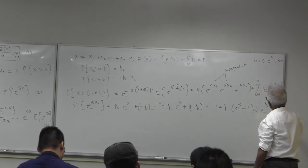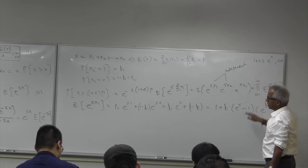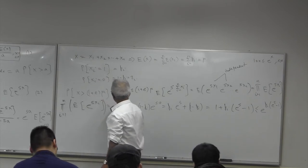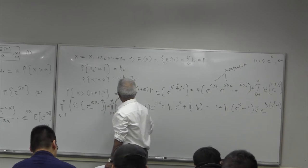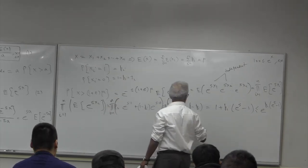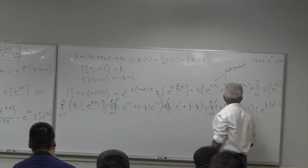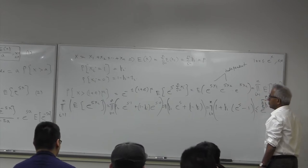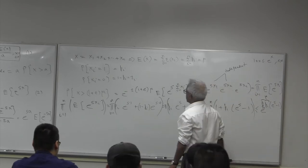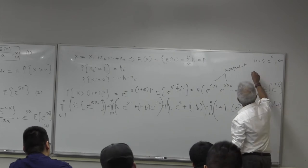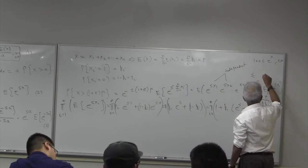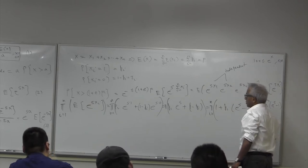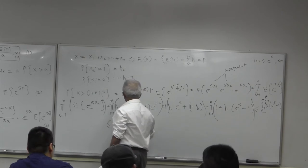Using the inequality 1 plus x is less than or equal to e^x for positive x, we get that 1 plus pi times (e^s minus 1) is less than or equal to e^(pi times (e^s minus 1)). Taking the product over i equals 1 through n, the product becomes a sum in the exponent, so we get e raised to the sum of pi times (e^s minus 1), which equals e raised to mu times (e^s minus 1), since sigma pi equals mu.